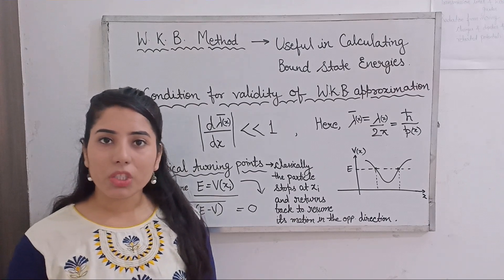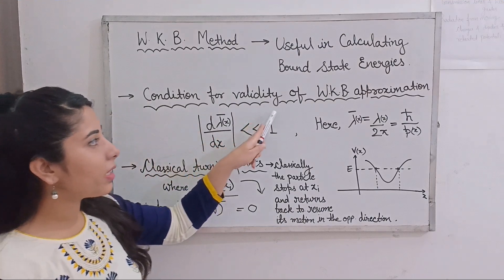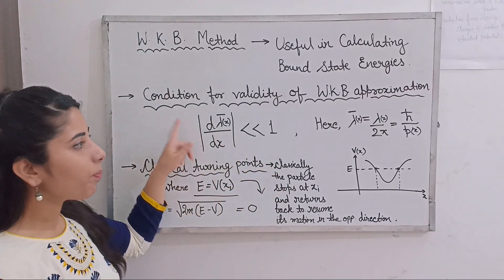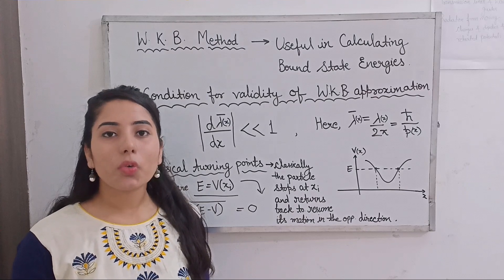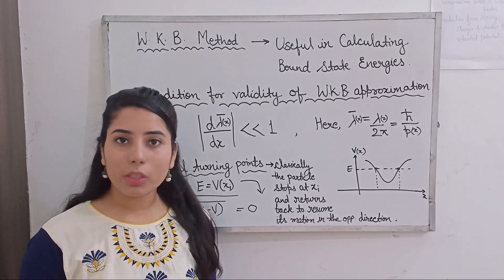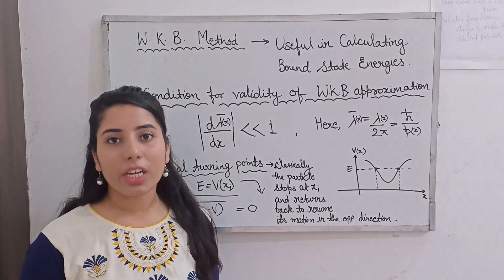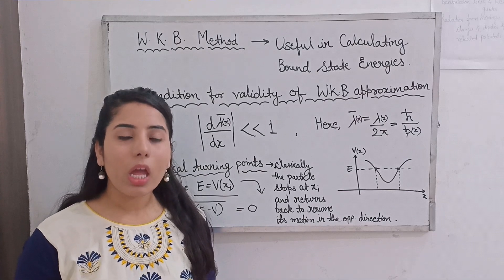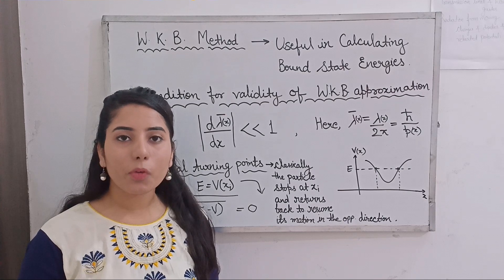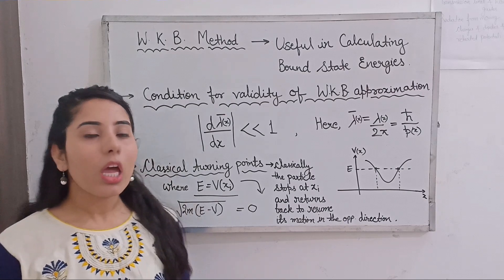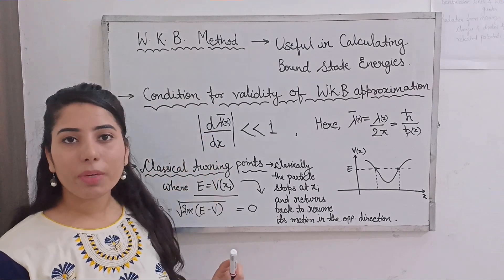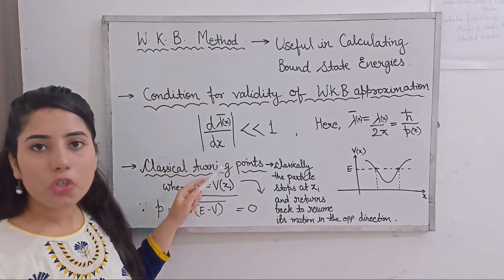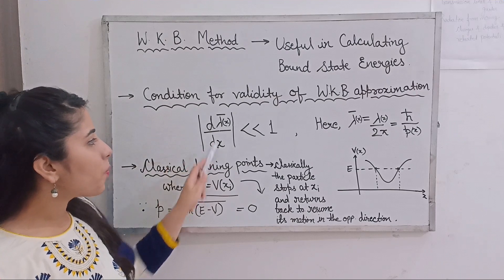There are a few important points to note. The condition for validity of the WKB approximation can be a direct exam question. Those who are familiar with this condition will easily be able to get the correct answer, so it's important to know it. The condition is: |dλ̄(x)/dx| must be very much less than 1.